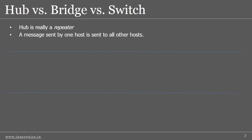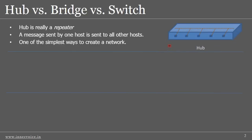A hub operates at layer one of the OSI model. This is because the destination MAC address is immaterial and the packets are sent to all the hosts on the hub. Since the hub ensures that every port gets the network packet, it is one of the easiest devices to create a network. Here is a picture that represents the network hub.